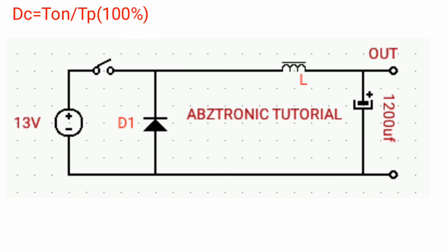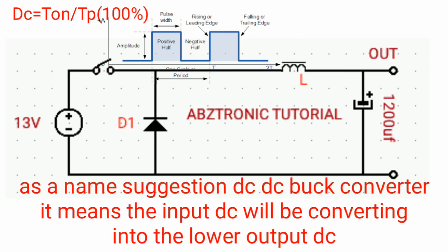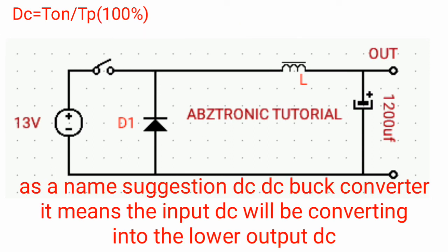In the actual circuit, using an IC like a 555 timer IC and a transistor creates the pulse width modulation timing to drive the switch, rather than a momentary switch. As the name suggests, a DC-DC buck converter means the input DC will be converted into a lower output DC. That is how the working principle of the DC-DC buck converter works. Thanks for watching my video tutorial — I'll see you again.